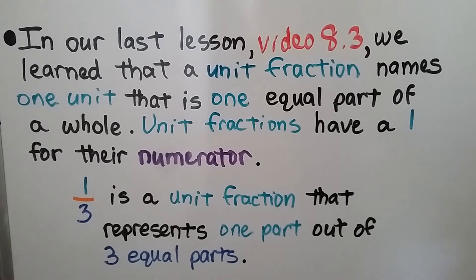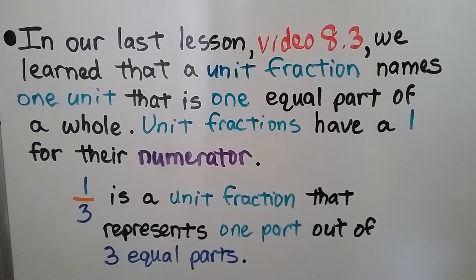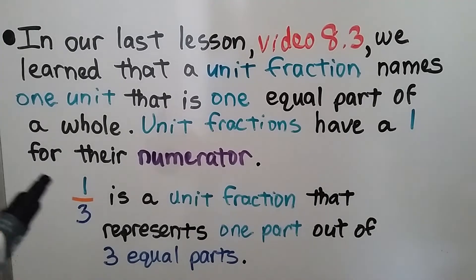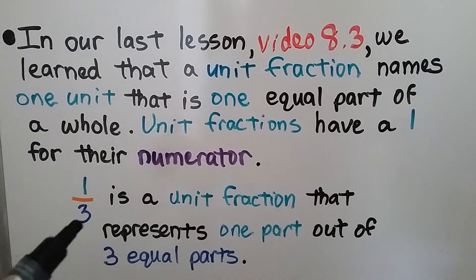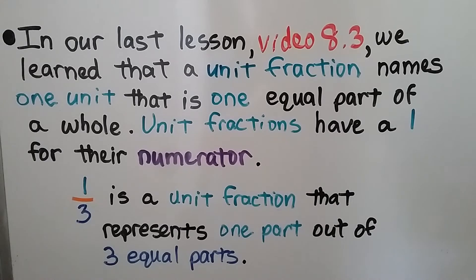In our last lesson, video 8.3, we learned that a unit fraction names one unit — that is, one equal part of a whole. Unit fractions have a one for their numerator. One-third is a unit fraction that represents one part out of three equal parts, and the numerator is a one. The three is the denominator. If you haven't seen video 8.3, there's a link in the description so you can watch it.